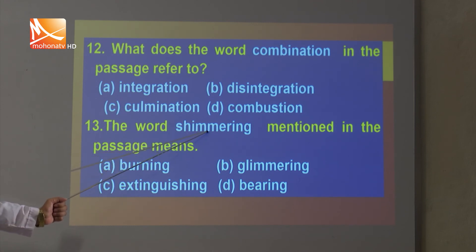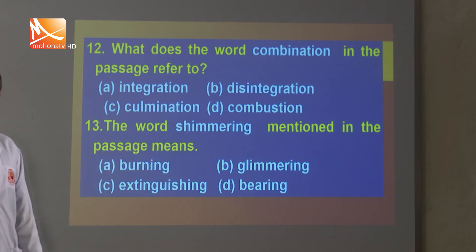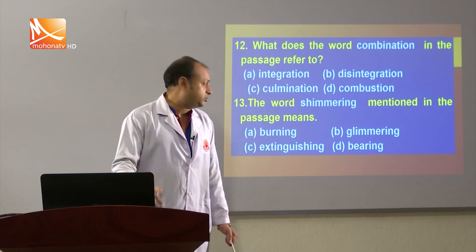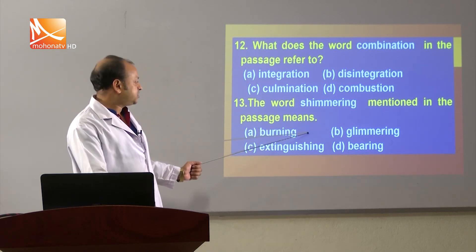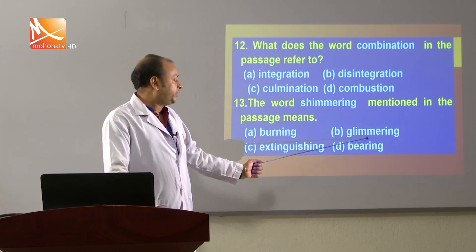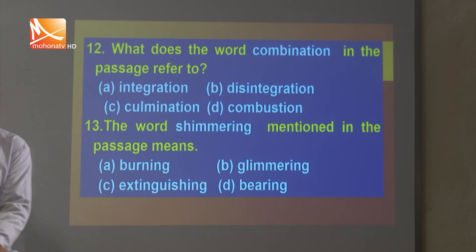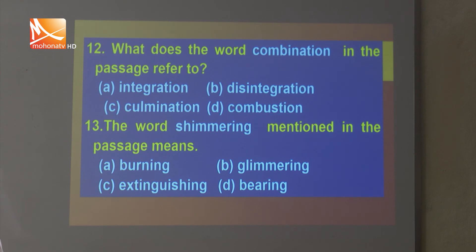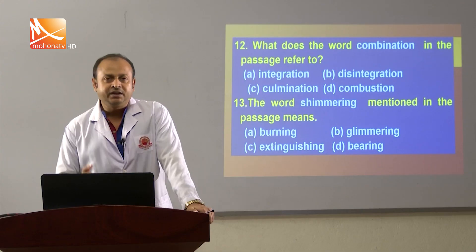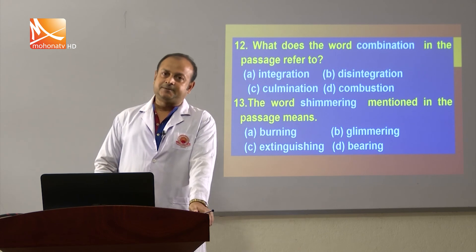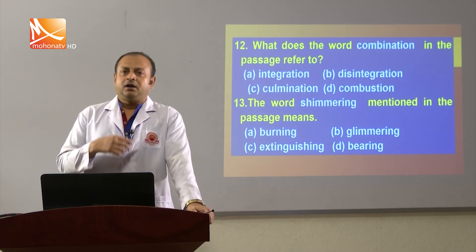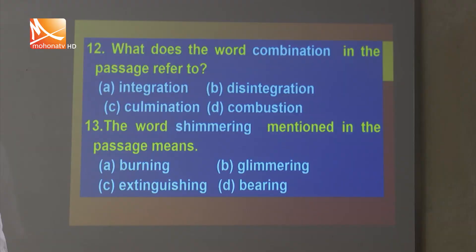Question 13: The synonym of the word 'shimmering' is glimmering — that is the correct option. In this way, we have to first read the lesson in the question, understand and visualize the total meaning and theme of the passage, and know the meanings of the difficult words.